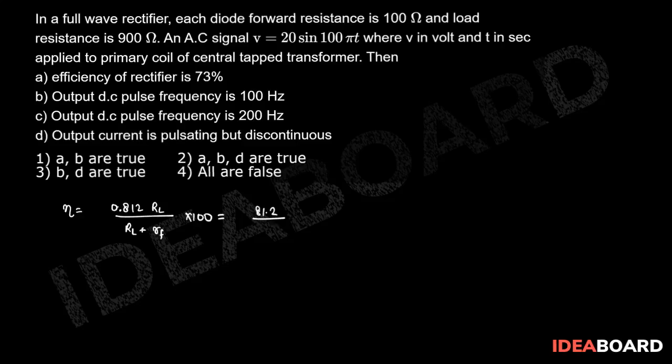η = 81.2 × (900/(900 + 100)) = 81.2 × (900/1000) = 73%. So statement (a) is correct. Now checking statement (b):